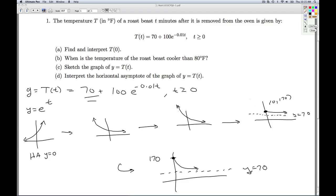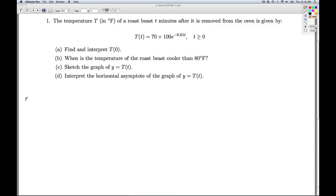So notice we have the horizontal asymptote y equals 70. What does that mean in this case? Well, part d then, as t goes off to infinity, the T of t is getting close to 70 from the right-hand side. We saw that graphically. We could actually see it numerically.